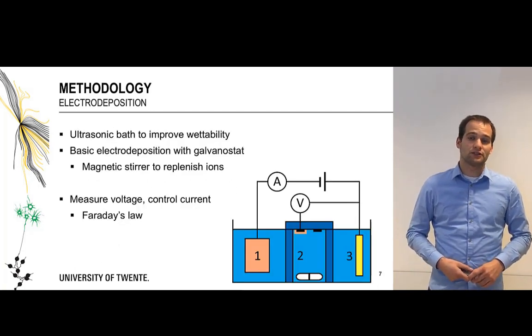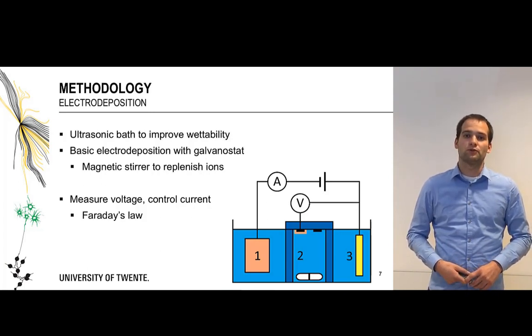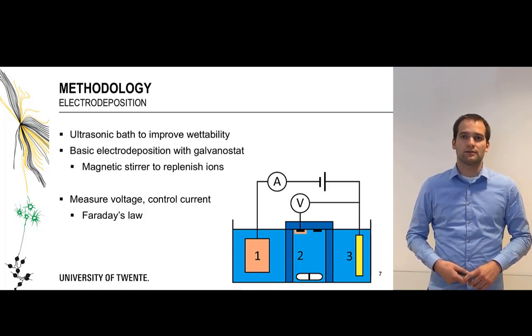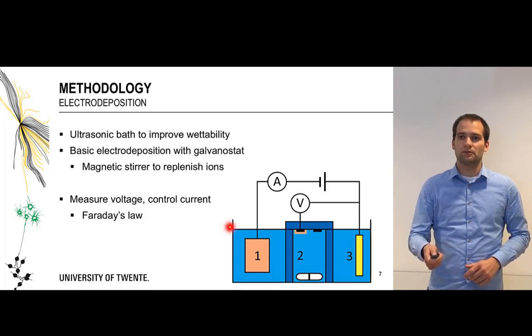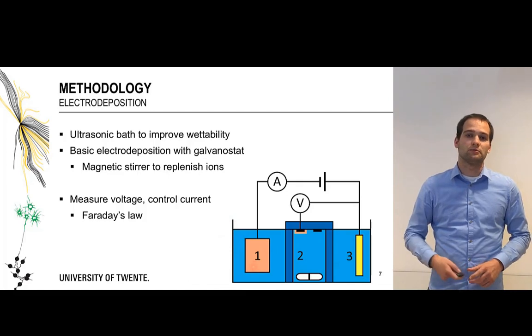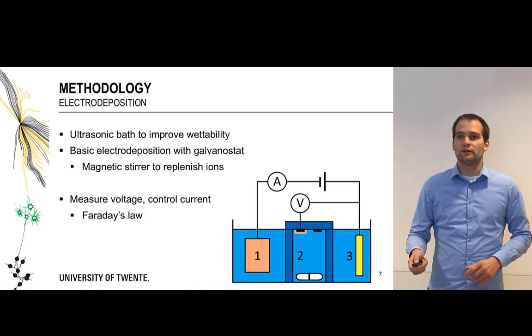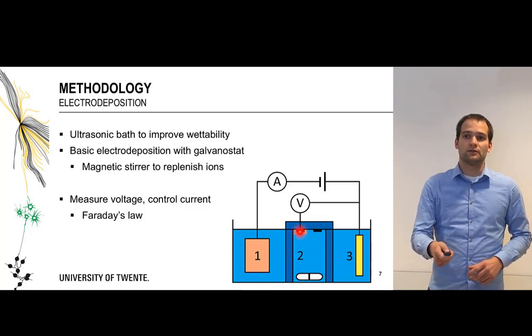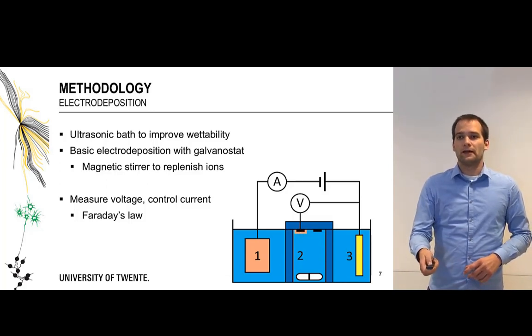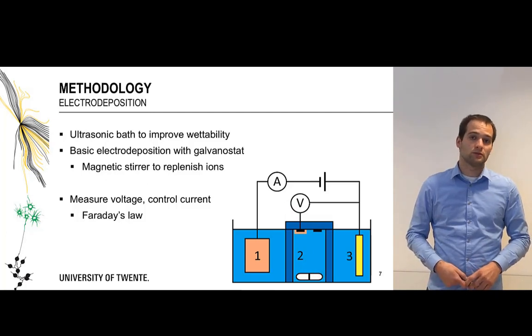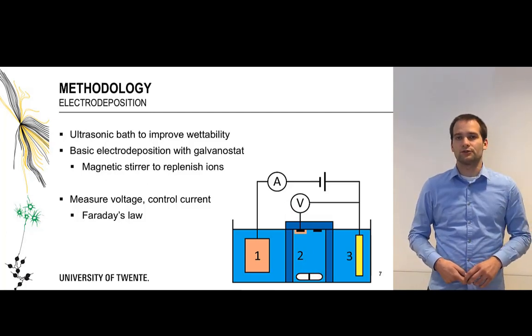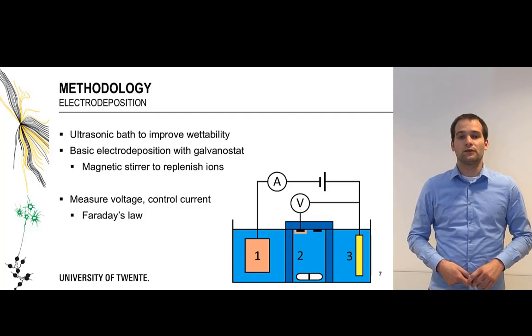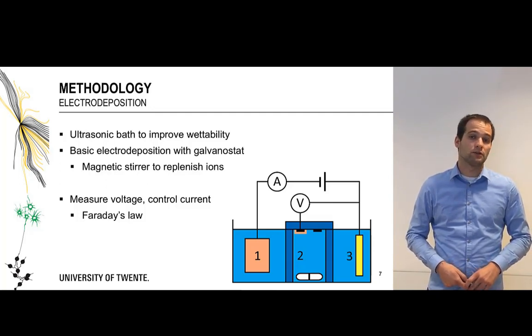For the electrodeposition first the samples are treated in an ultrasonic bath with ethanol to improve wettability and next the electrodeposition is performed with a standard galvanostat. We have a three electrode setup where we have our counter electrode which is either a big copper or a big zinc plate, a standard silver chloride reference electrode, and our sample is connected as the working electrode. At the bottom we have a magnetic stirrer to get proper replenishment of ions in the solution close to the working electrode. During the electrodeposition we measure the voltage and we control the current and in this way through Faraday's law we can estimate the amount of metal deposited on the surfaces.